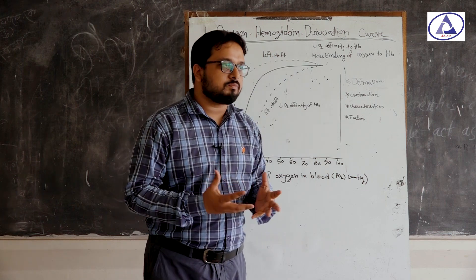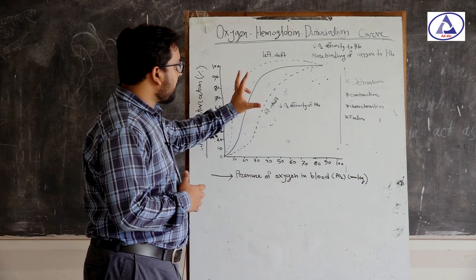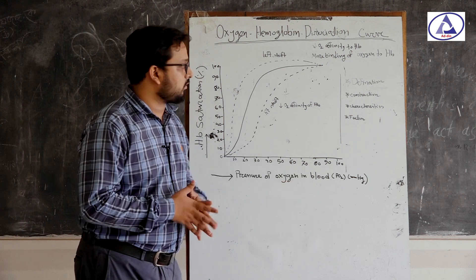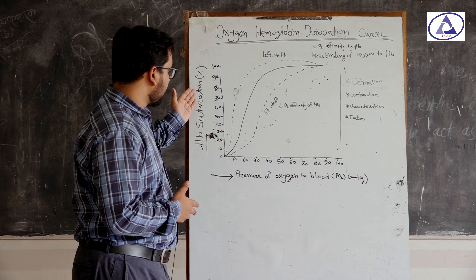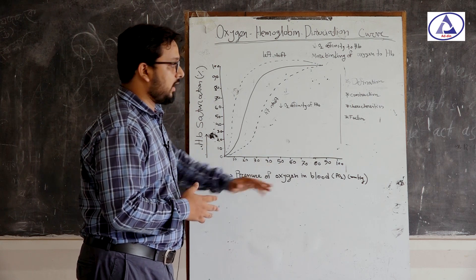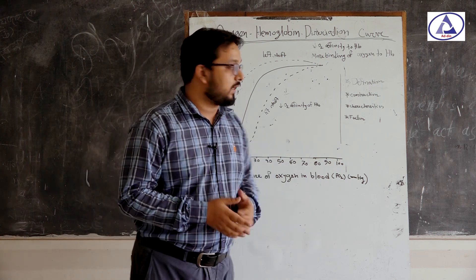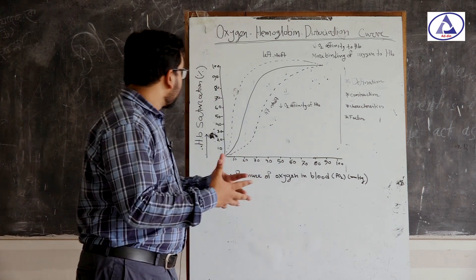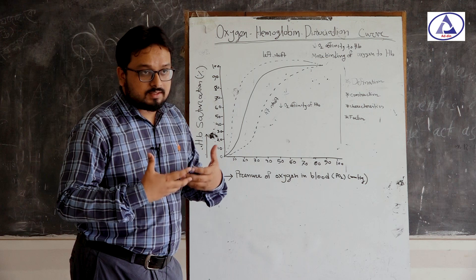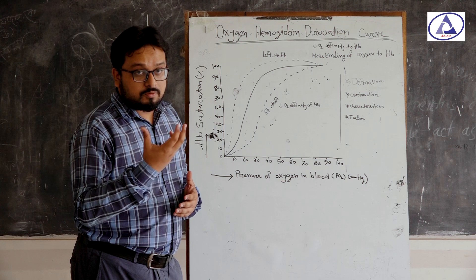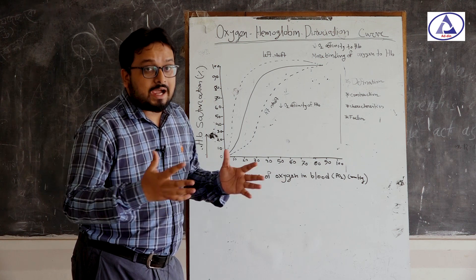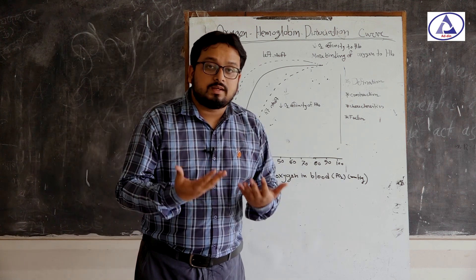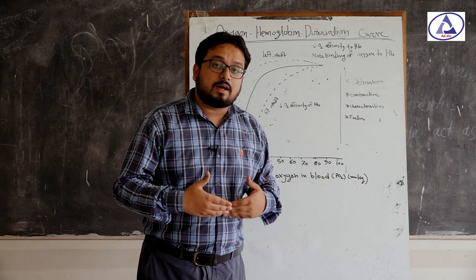Now, let us go to construction — meaning the components. From the definition, we have seen the two components: hemoglobin saturation and pressure of oxygen in blood. Hemoglobin saturation means the ability of hemoglobin to bind with oxygen. What is the pressure of oxygen in the blood? It is the partial pressure of oxygen. The more oxygen in the blood, the more the pressure will rise.